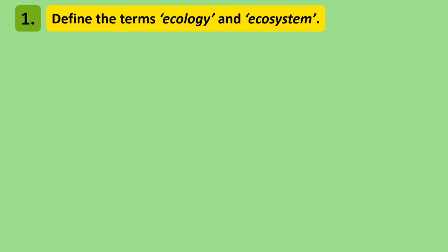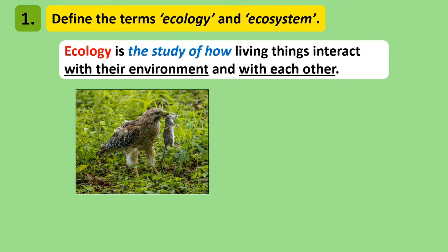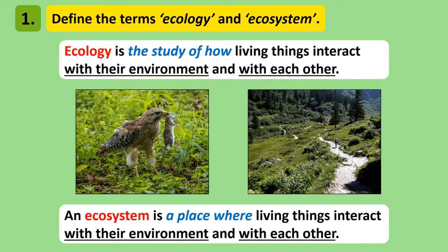So what do the terms ecology and ecosystem mean? Ecology is the study of how organisms interact not only with each other but also with their environment. An ecosystem is a particular area where living things interact with each other and their environment. Learn off these two definitions and take note of how similar they are.